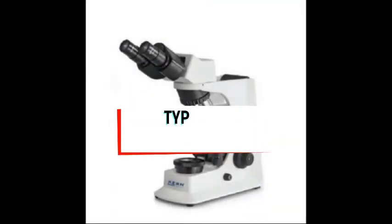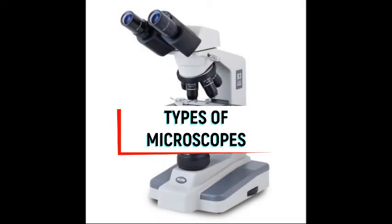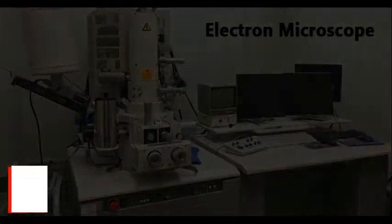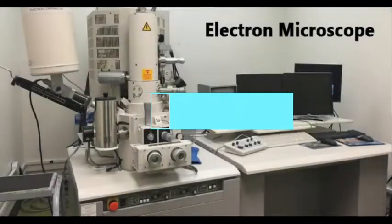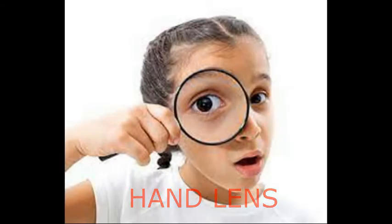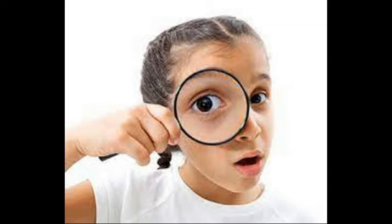There are various types of microscopes, but for this lesson we're going to talk about five basic ones. We have the compound microscope, the light microscope, the electron microscope, and the hand lens. The hand lens is the simplest and most commonly used magnifier in the lab — it is also called the magnifying glass.